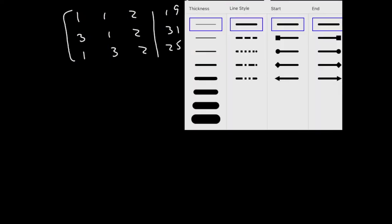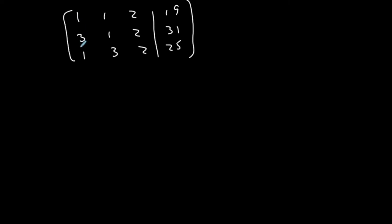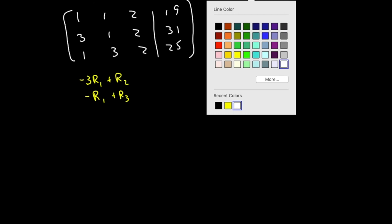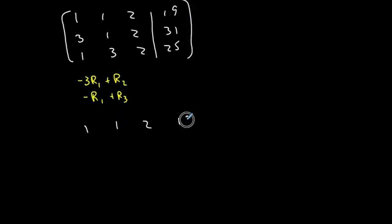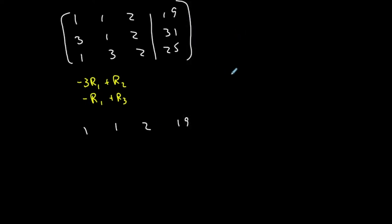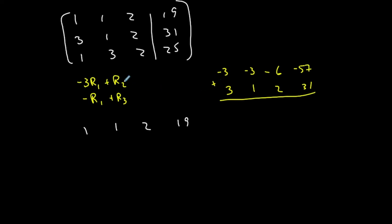Once I have a 1 in the upper left corner, I need zeros underneath it. I'm going to do two operations at the same time: negative 3 times row 1 plus row 2, and negative row 1 plus row 3. Row 1 is not changing. For row 2: multiply row 1 by negative 3 to get negative 3, negative 3, negative 6, negative 57, then add row 2 (3, 1, 2, 31) to get 0, negative 2, negative 4, negative 26.